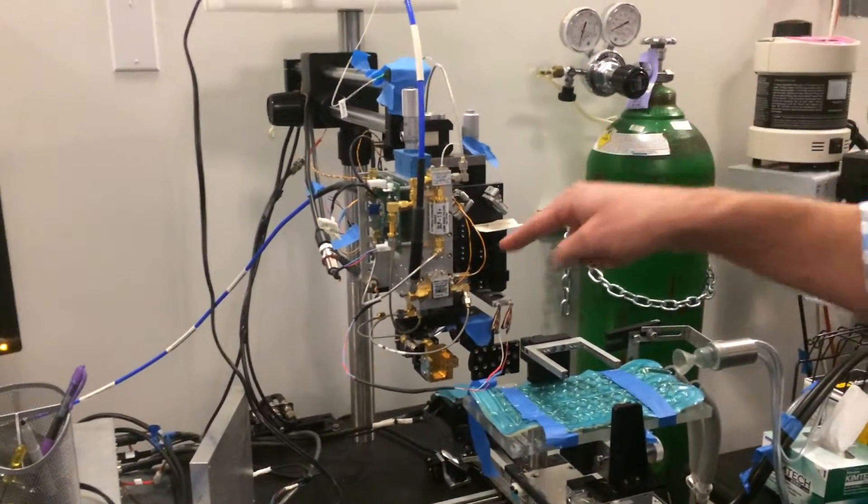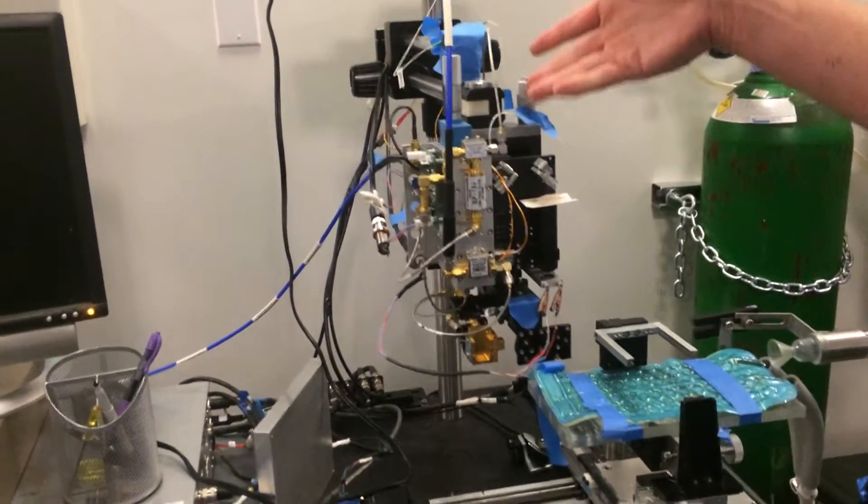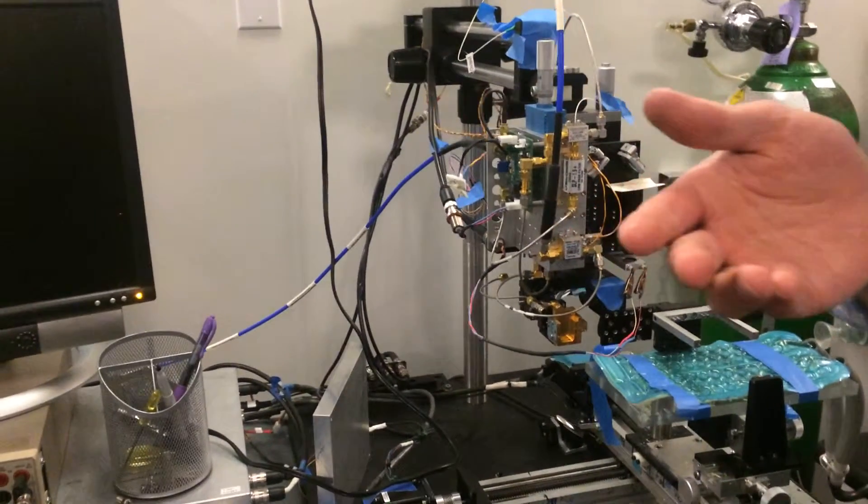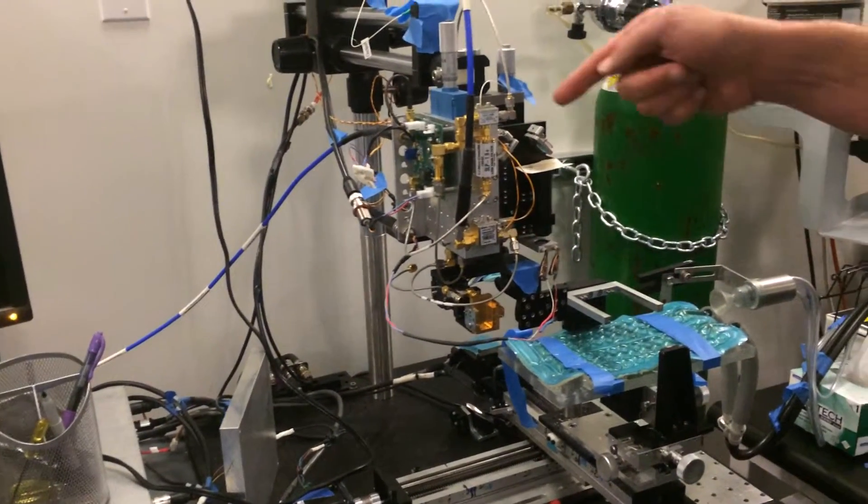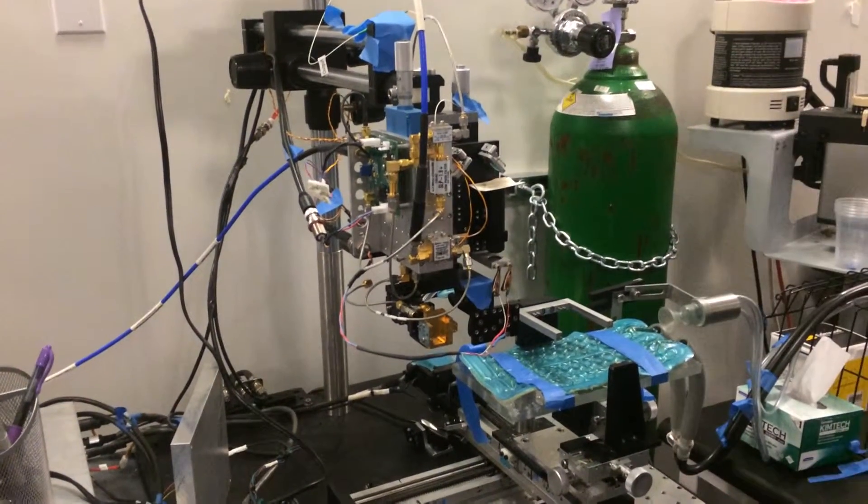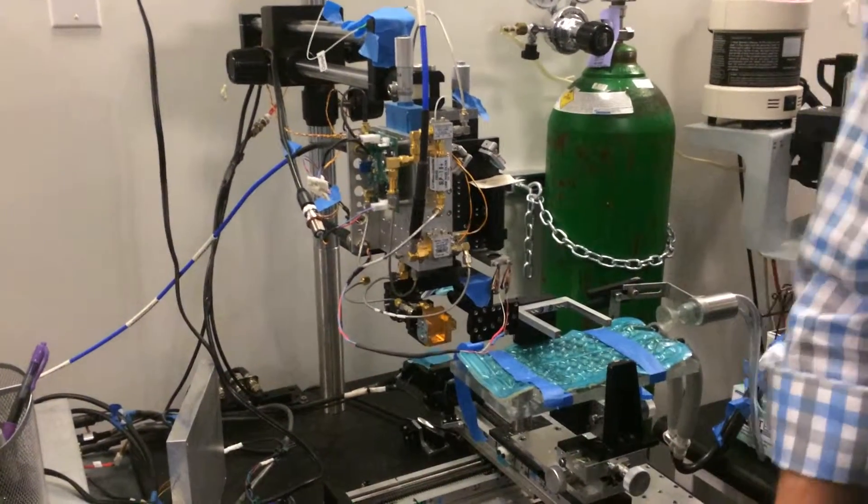But the real reason that we have all these extra dielectric mirrors here is that what comes out of the PPLN is a lot of 780 and a crap load of 1560. The easiest way to filter it out is put these dielectric stacks and every time it hits a bounce, the 780 is like 99% reflectivity. The 1560 is basically one or two.